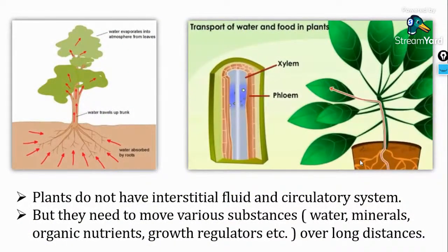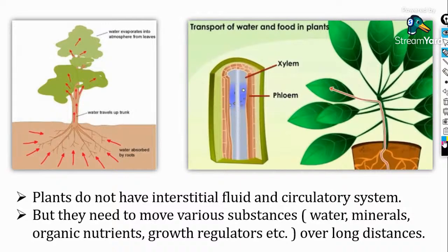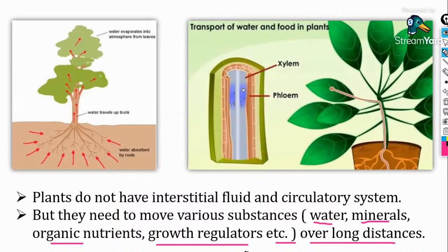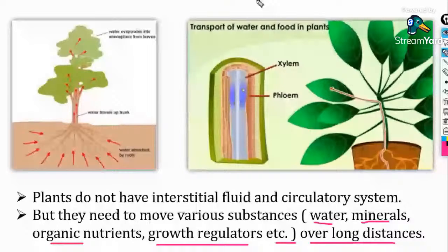Let's start today's session — Plant Physiology, Chapter 1, Transport in Plants. Plants do not have interstitial fluids and a circulatory system, but they need to move various substances such as water, minerals, organic nutrients, growth regulators, etc. over long distances. They do not have blood or circulatory fluids to carry nutrients and excretory products from specific parts to other organs. What helps a plant transport food, water, and minerals is what we are going to learn in this chapter.